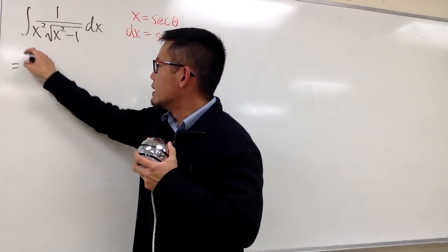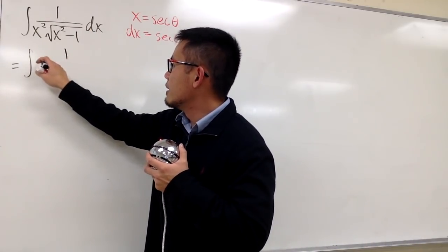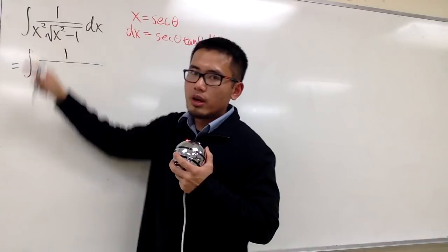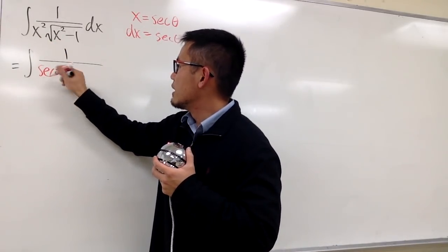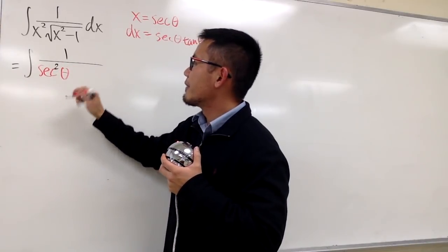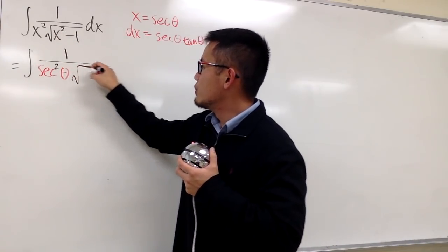As we can see, this is going to be the integral. On the top, we have 1 over x squared becomes secant squared theta. So let's put this down. Secant squared theta. And then we have the square root like this.